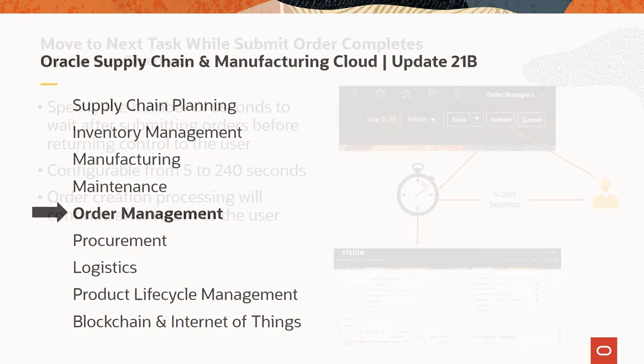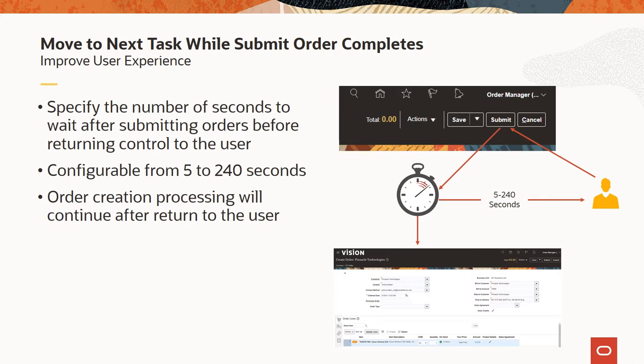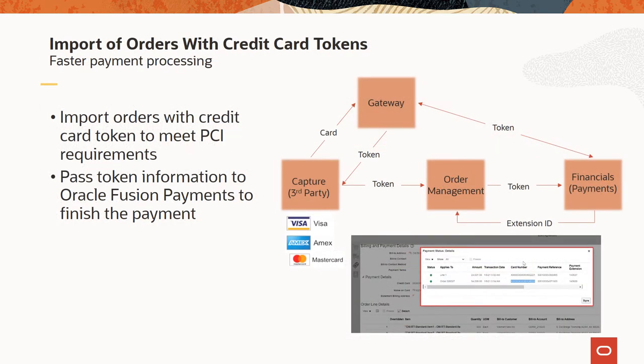Now, order management. To improve the user experience and efficiency of the sales entry process, you may now set a time limit from 5 to 240 seconds for the order submit process to complete. If it does not complete in this time, it will return the screen back to the user who may progress to their next task, and the sales order submit process will continue in the background. If you use credit cards to make payment in your upstream source system, then when you import orders using the REST API, you may now include the credit card tokens. These are part of the Payment Card Industry Data Security Standard requirements and help shield sensitive details when you pay for the sales order transaction.